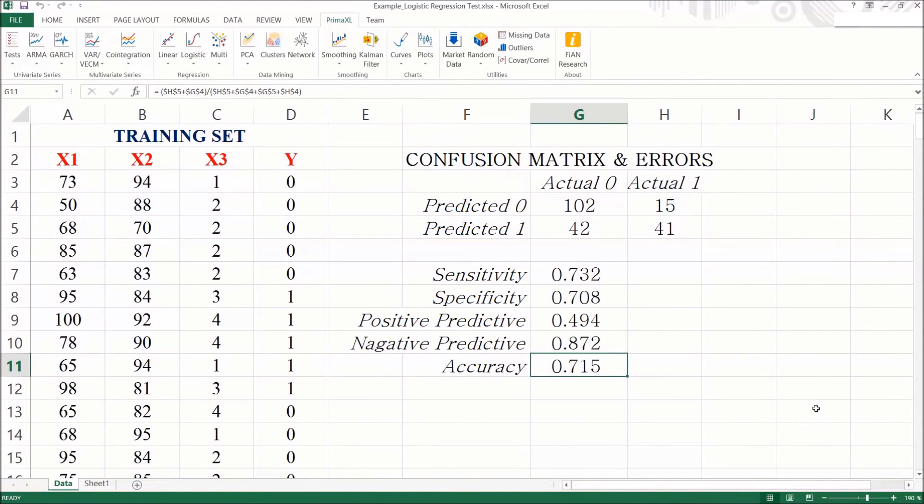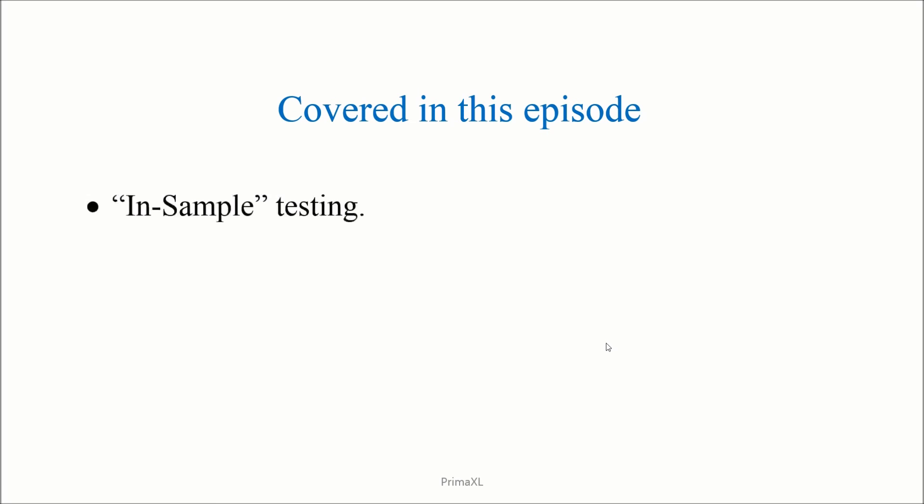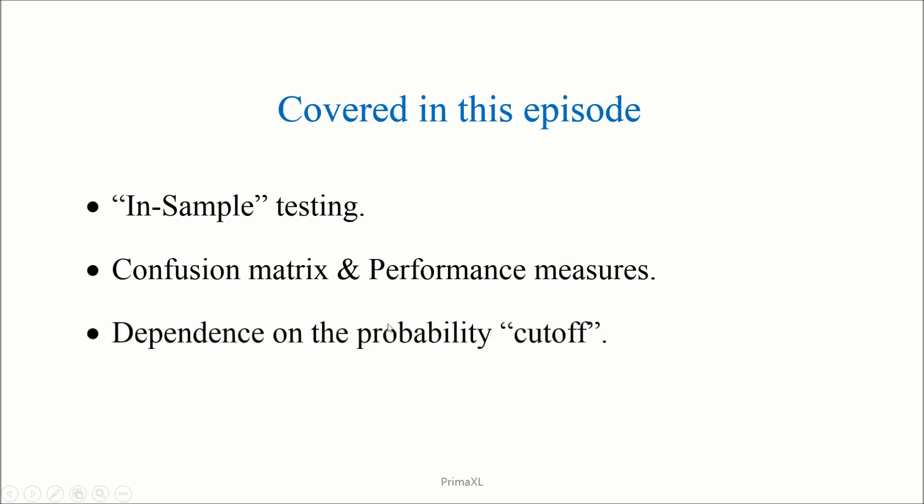Okay, finally a summary. Today, we saw how to test the performance of the binary classification. We used the in-sample testing method. We calculated the confusion matrix and other performance measures. We could see the dependence on the probability cutoff. More about this in the next episode.